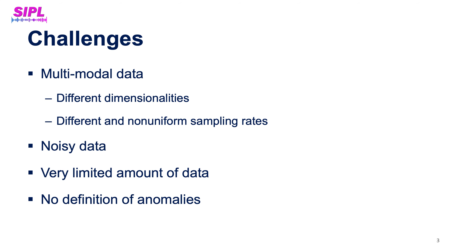This data poses several challenges. First, it comes from different modalities — video and IMU — sampled non-uniformly at different sampling rates. Second, the measurements contain noise. There is a very small amount of data available, only 12 short drone flights. And finally, by definition, not all types of anomalies are known in advance, so it is a challenge to generalize to different types of possible anomalies and additional data.